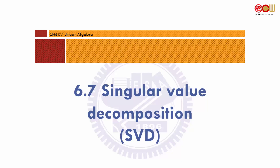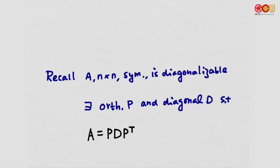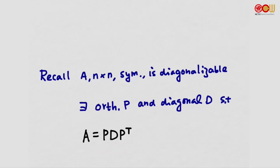6.7 Singular Value Decomposition, or simply SVD. We know a symmetric square matrix is always diagonalizable — we can find orthogonal P and diagonal D such that A equals P D P-transpose. But what if A is not symmetric, or even not square?